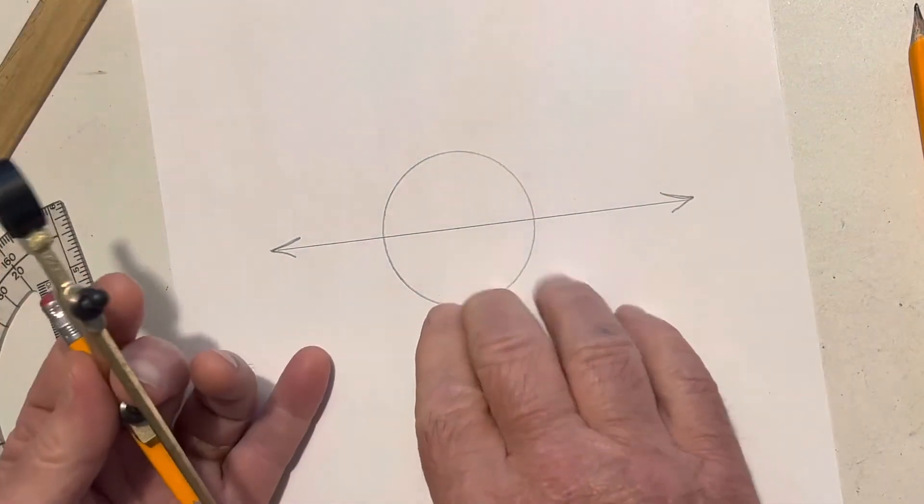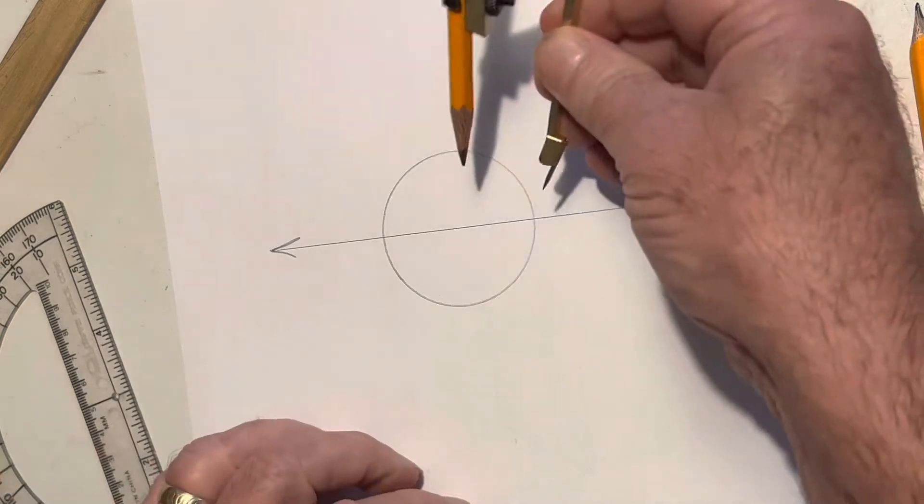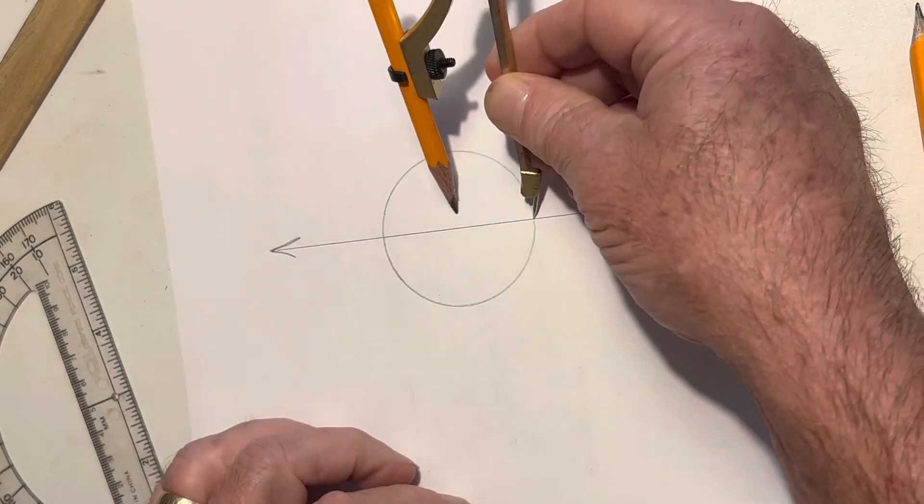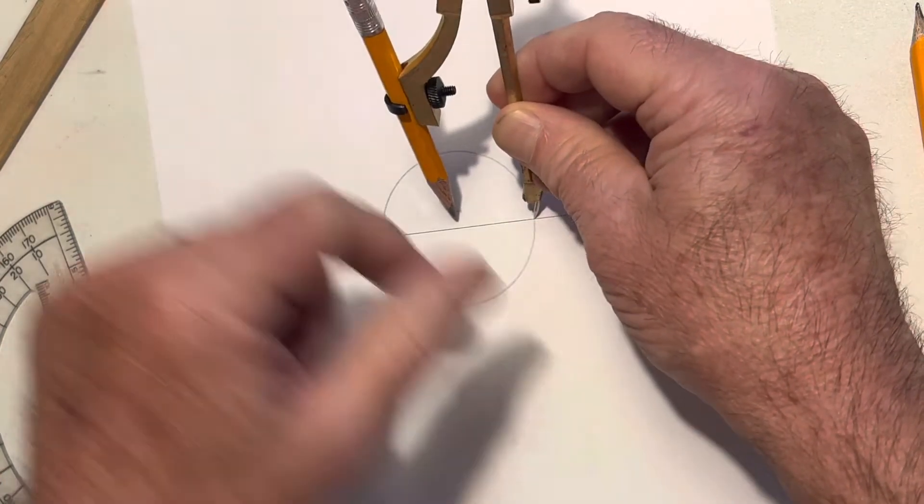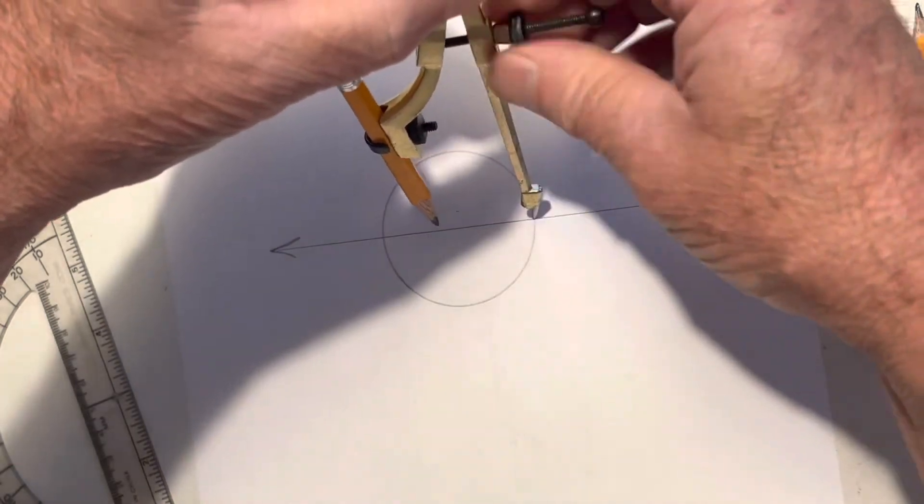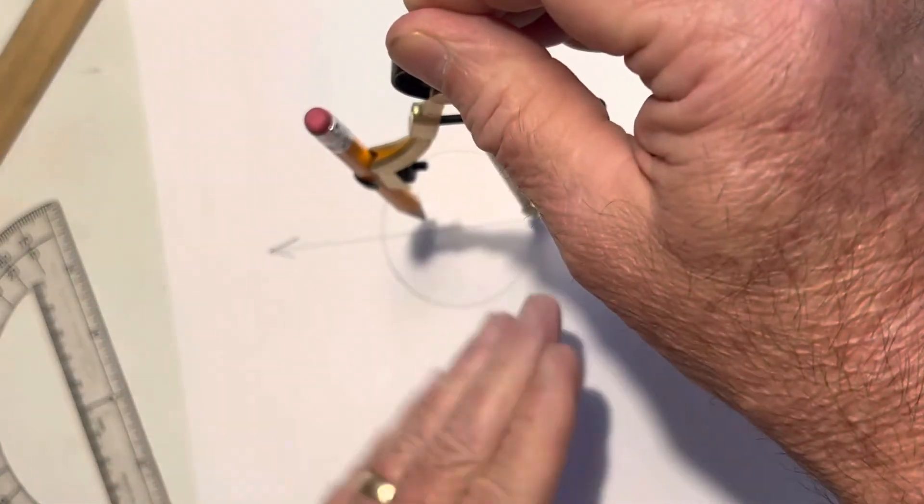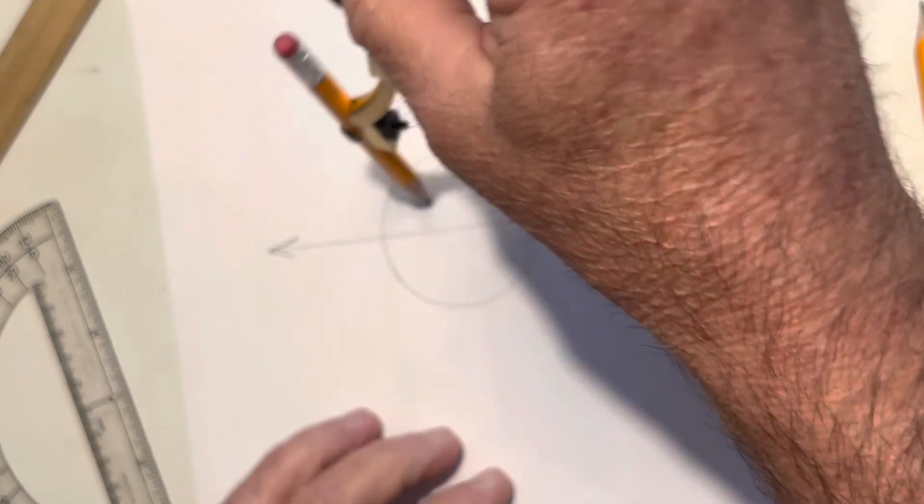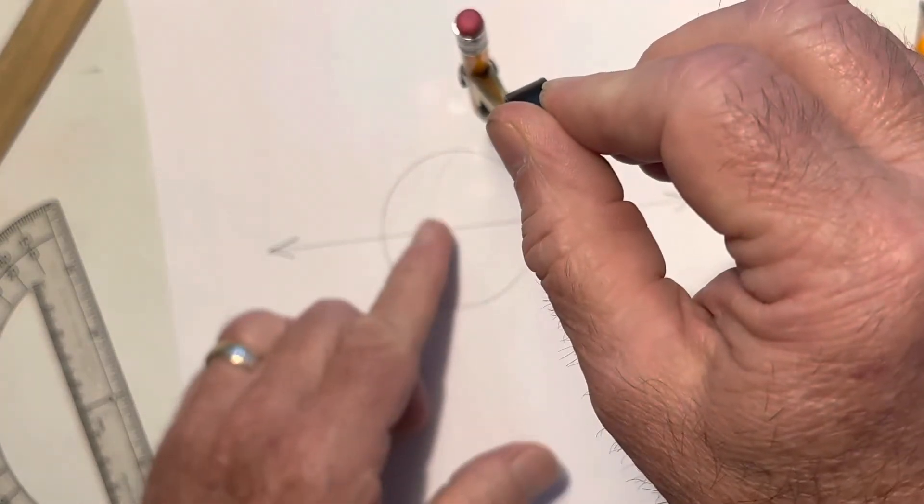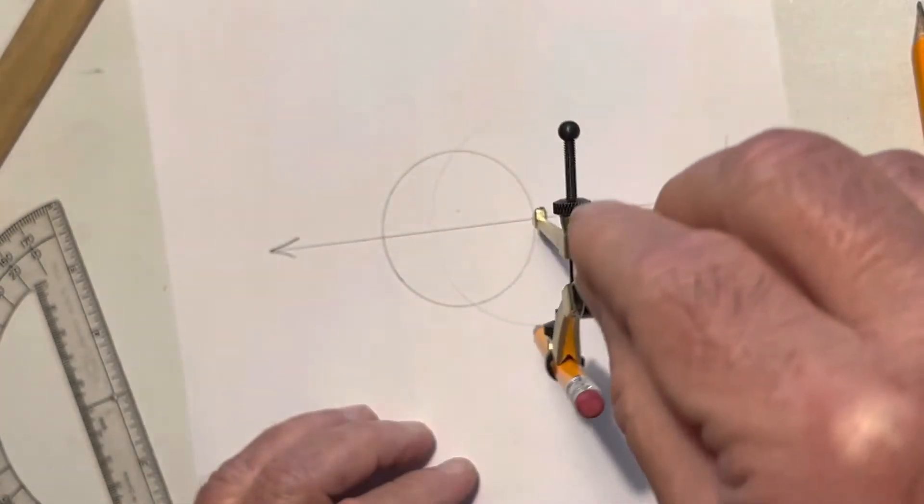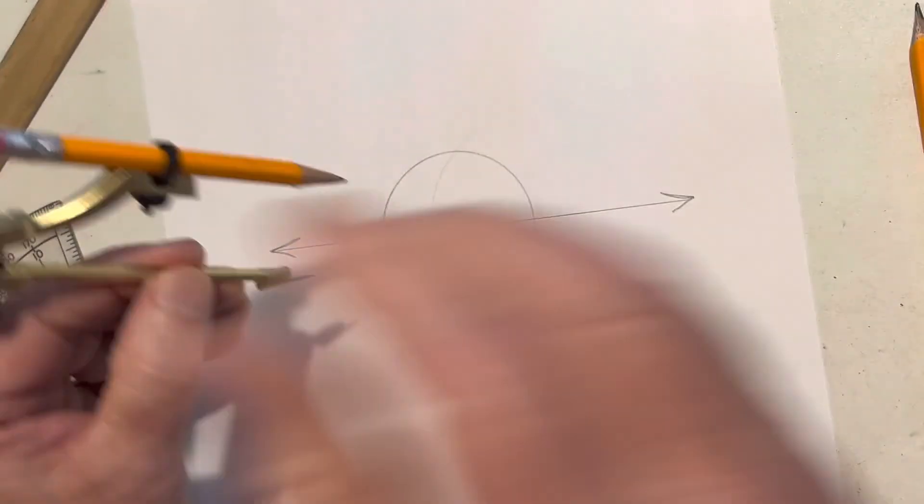Now I want to find the center. I already know this point here, but I'm going to take my compass and put it on the edge right here. Expand the compass to come out about three turns on my pencil. Draw a light line there and a light line here, just let the compass do that.